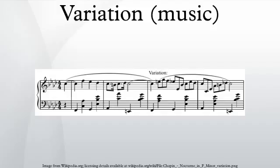In the classical era, Wolfgang Amadeus Mozart wrote a great number of variations, such as the first movement of his Piano Sonata in A or the finale of his Clarinet Quintet.